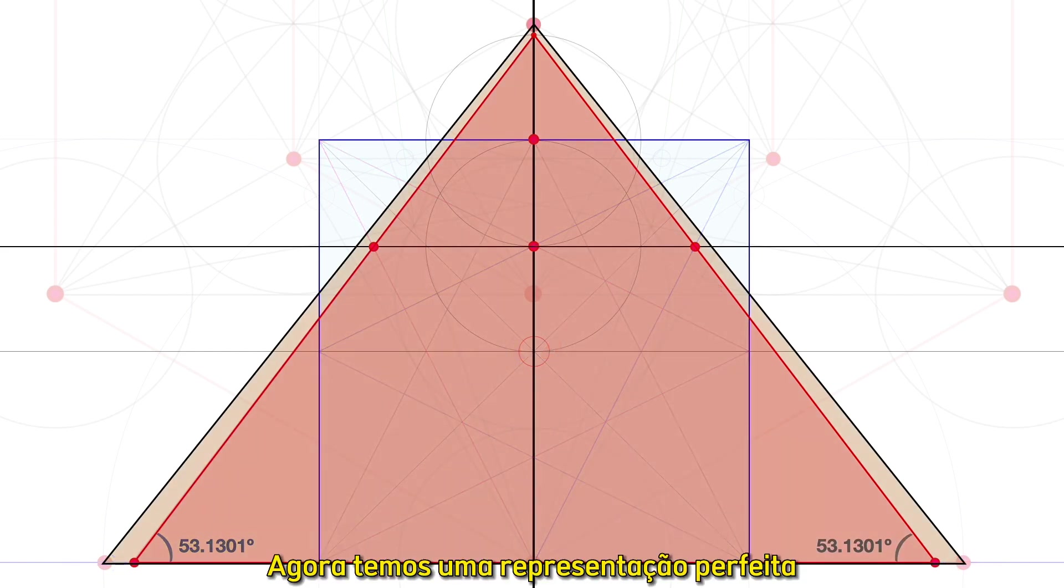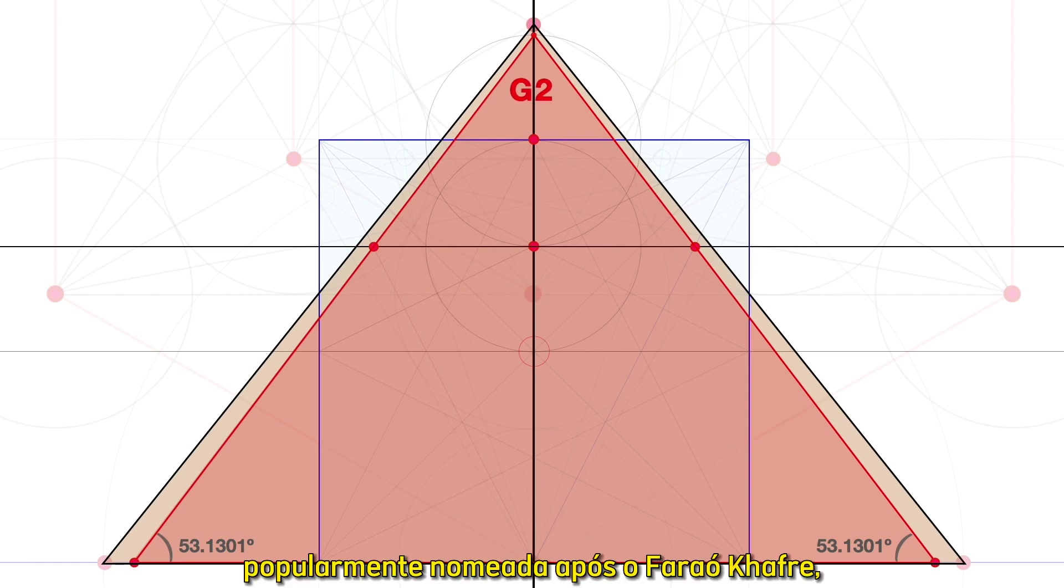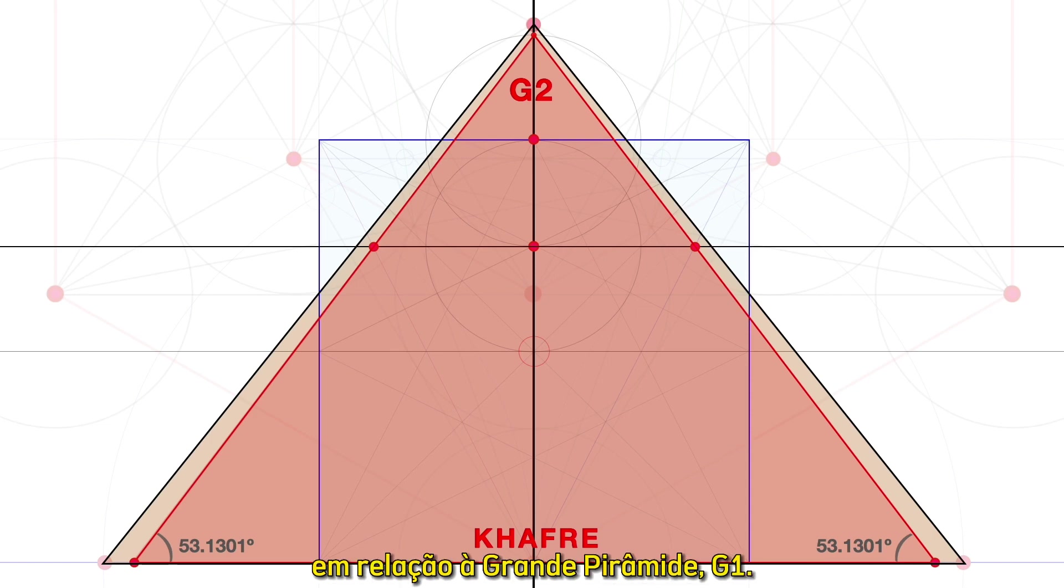Since the cross-section of the Khafre pyramid is two 3-4-5 triangles back to back, we now have a perfect representation of the central pyramid at Giza, G2, popularly named after the pharaoh Khafre. And it's in precise size relationship to the Great Pyramid, G1.